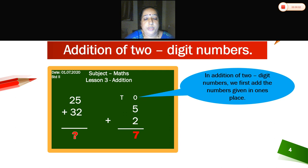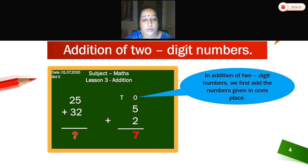What is 5 plus 2? Count on your fingers, children — 1, 2, 3, 4, 5. Take more two fingers: 6, 7.